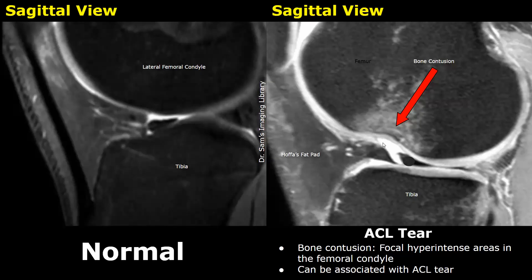Bone contusions or bone bruises can be seen in some trauma cases affecting the knee. They will appear as focal, hyperintense bright areas inside the bone. The bright areas are due to hemorrhage and edema. These bone contusions can be associated with ACL tears.